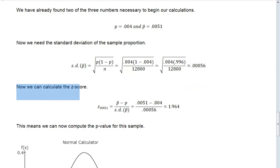Now we can calculate the Z-score. A Z-score has a subscript of the sample proportion. The Z-score is calculated by taking your sample proportion minus your population proportion and dividing it by the standard deviation of your sample distribution. Plugging in, I've got 0.0051 minus 0.004 divided by 0.00056. When you calculate that, you get 1.964, very close to two.